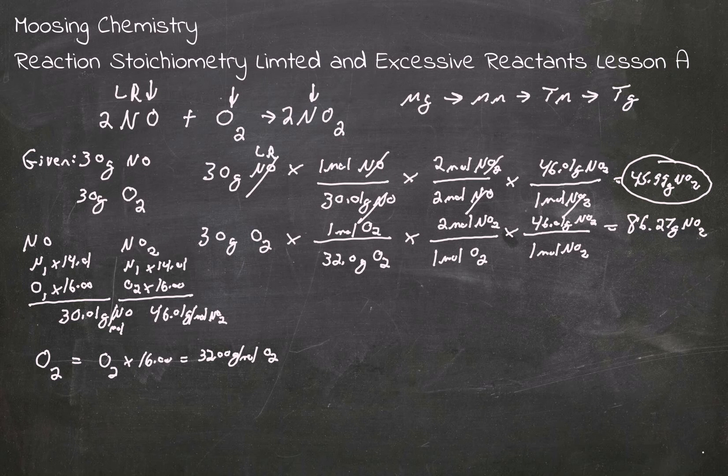Now, once we know the limiting reactant of NO, we can calculate how many grams of NO2 it will make. So if we want to know, for example, how many moles that is. So we made – using 30 grams of NO – so we want to know how many moles of NO2 that's going to make.